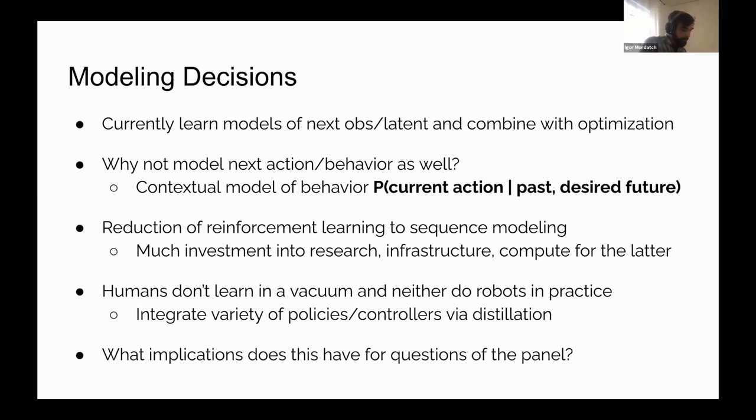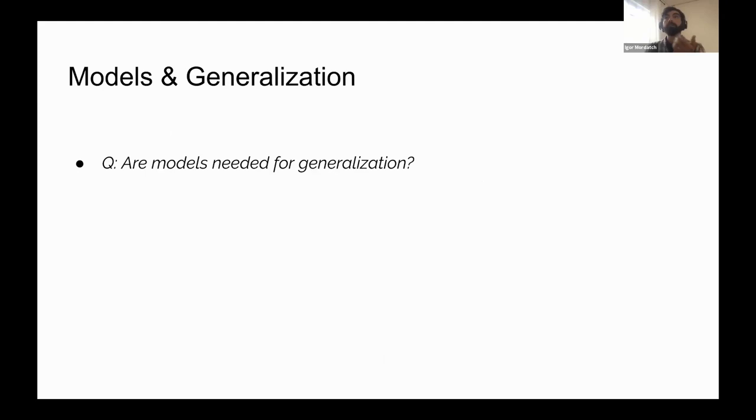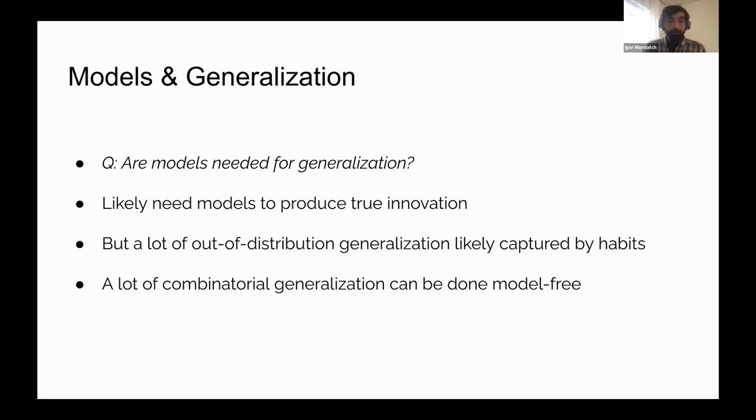What are some implications for the questions posed on this panel? One question is: are models needed for generalization? I think you likely need model-based optimization or search to produce true innovation. But a lot of what we consider as out-of-distribution generalization could be captured by model-free habits, especially combinatorial generalization.